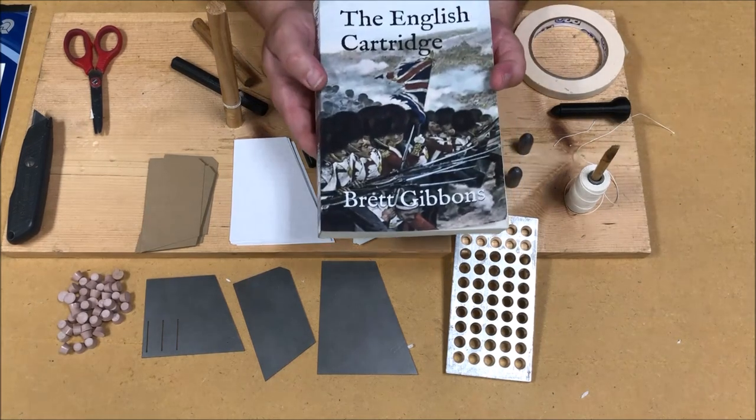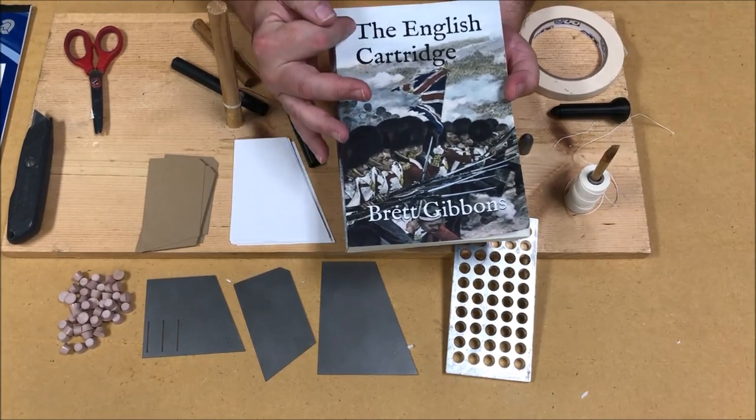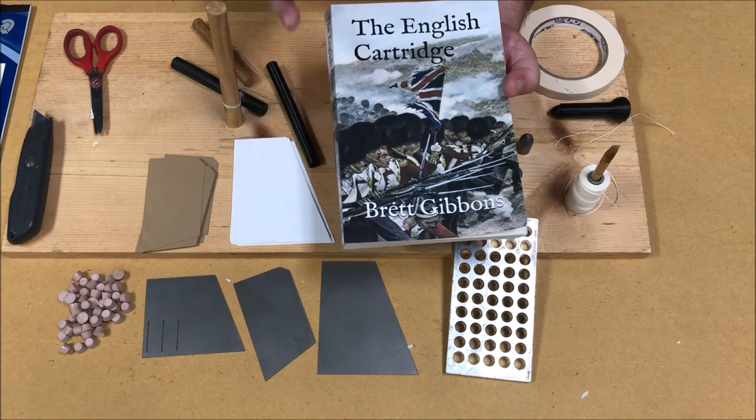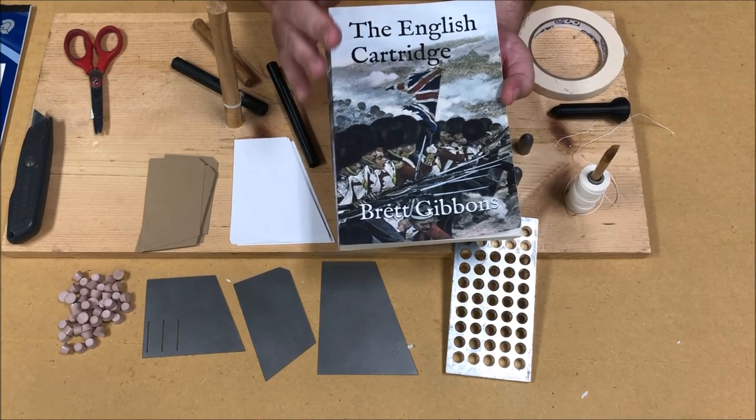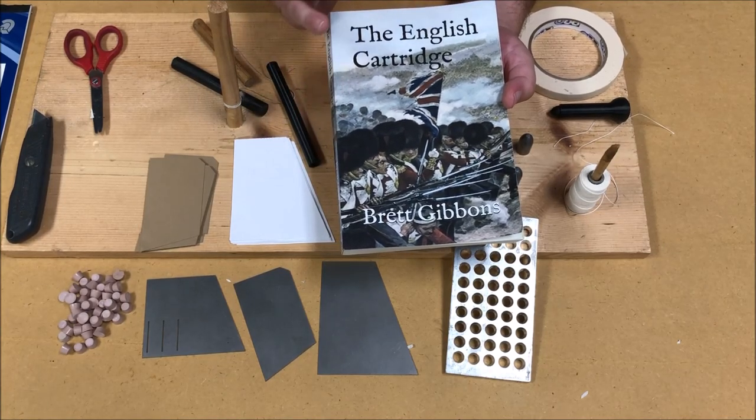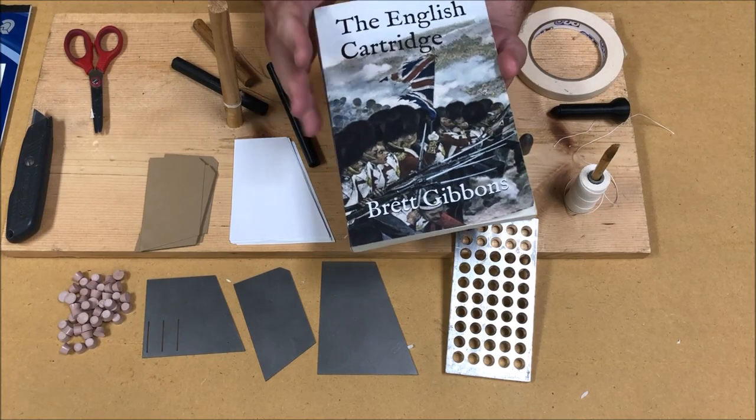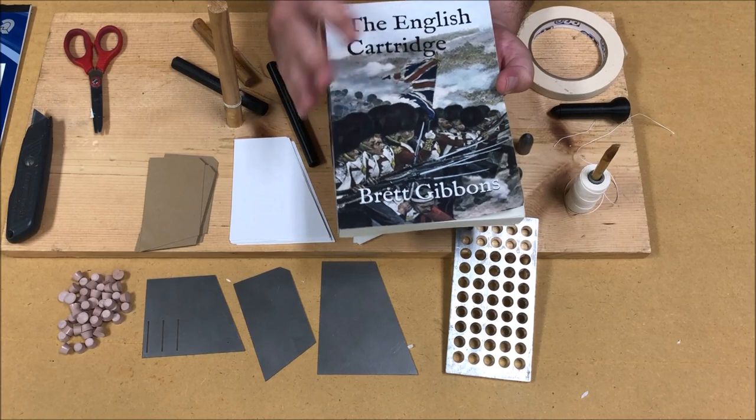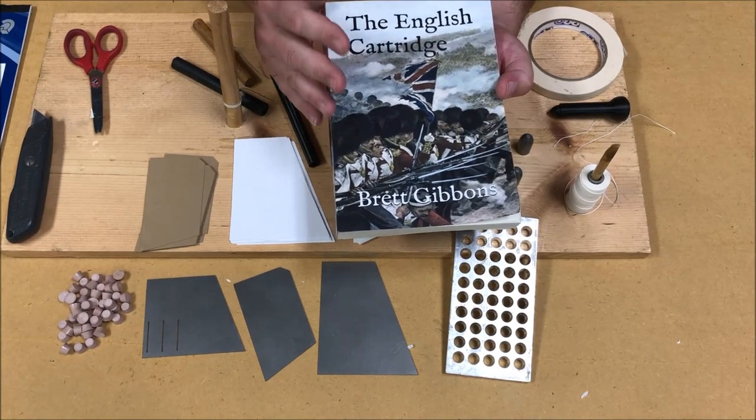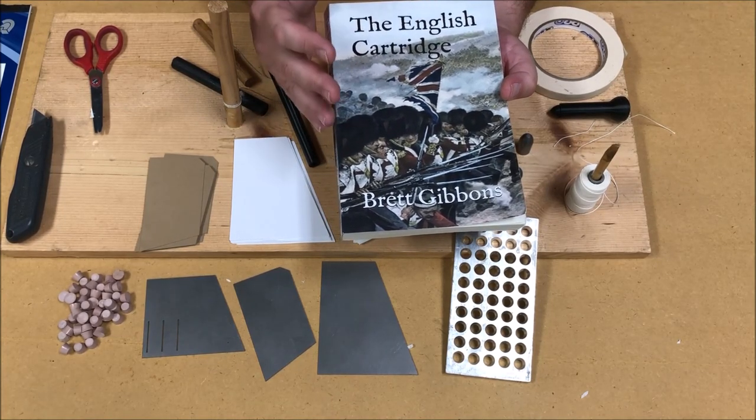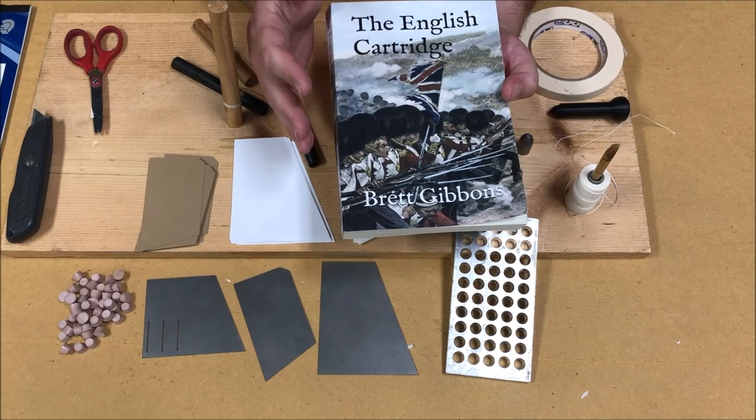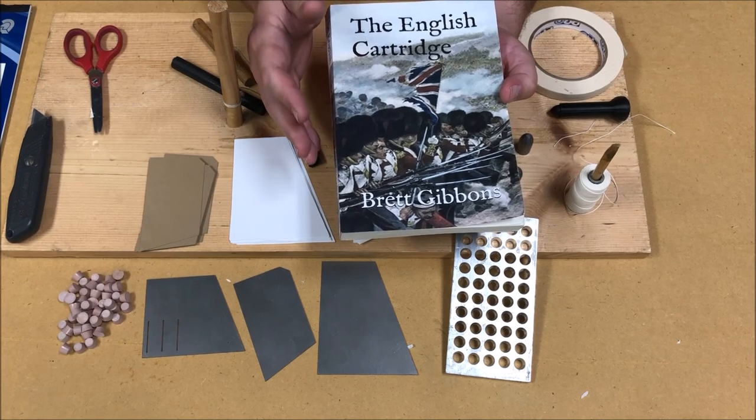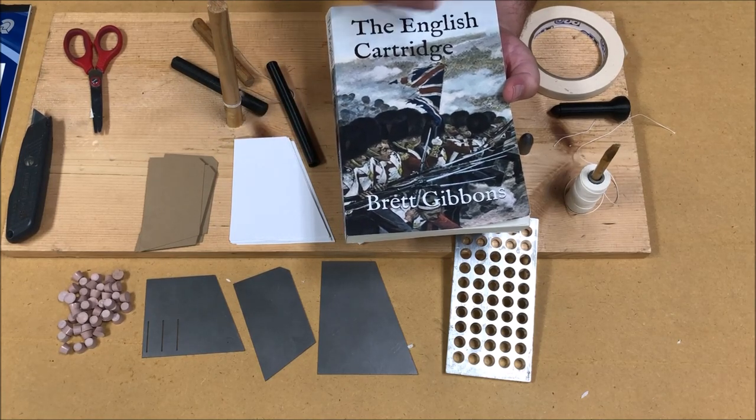But not too long ago, a new book has come out by Mr. Brett Gibbons called The English Cartridge. This is a fantastic work. Anyone who's interested in muzzleloading, in the Civil War, in the Enfield rifle musket, this is really a must-have book.